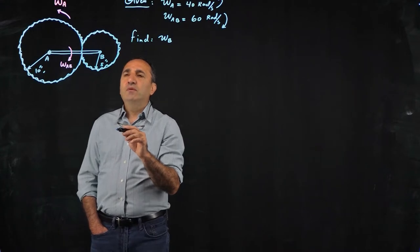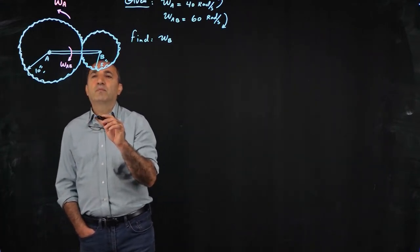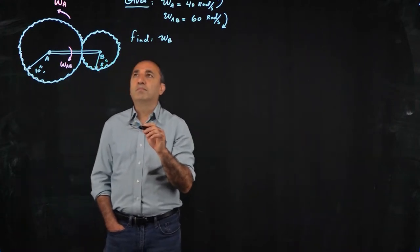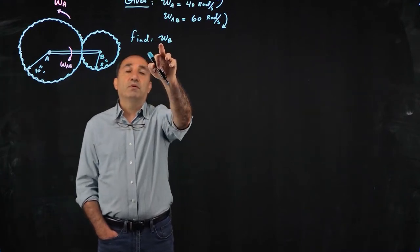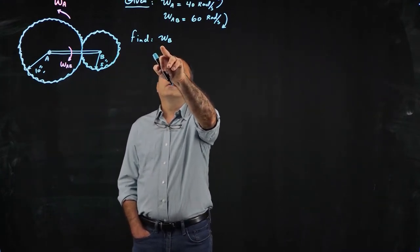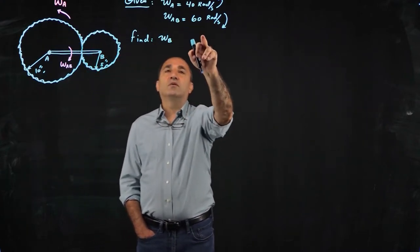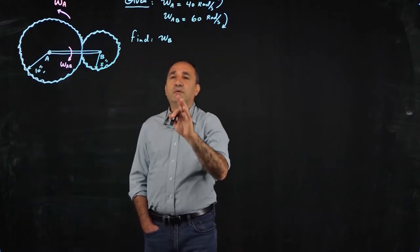Now you have to be very careful here that this particular problem, you cannot treat it as a gear ratio problem. The objective is to find omega of B given omega of gear A and angular speed of arm AB.